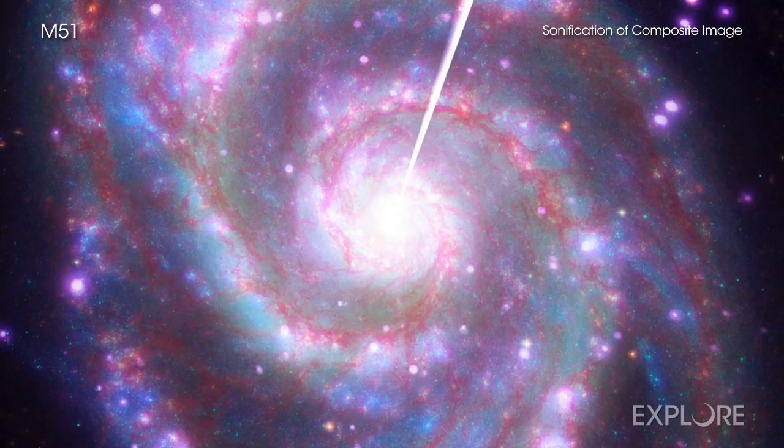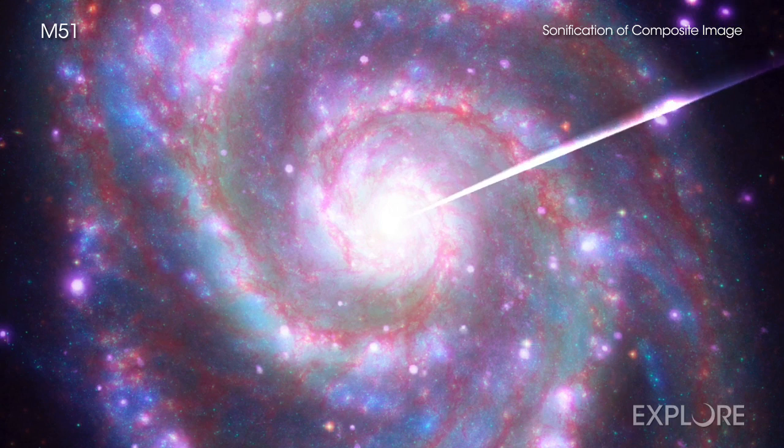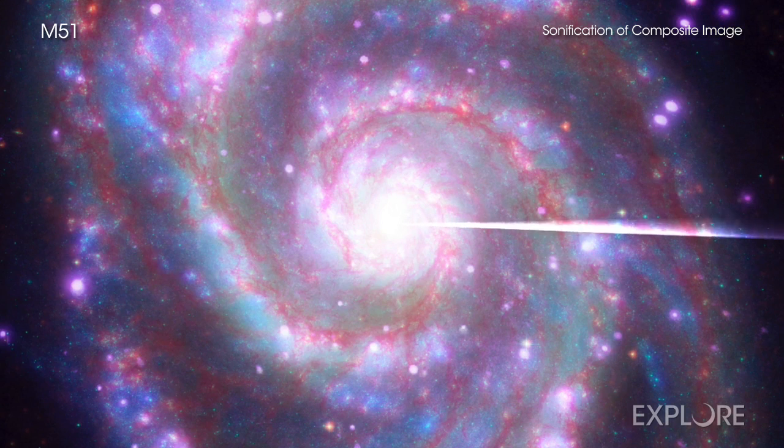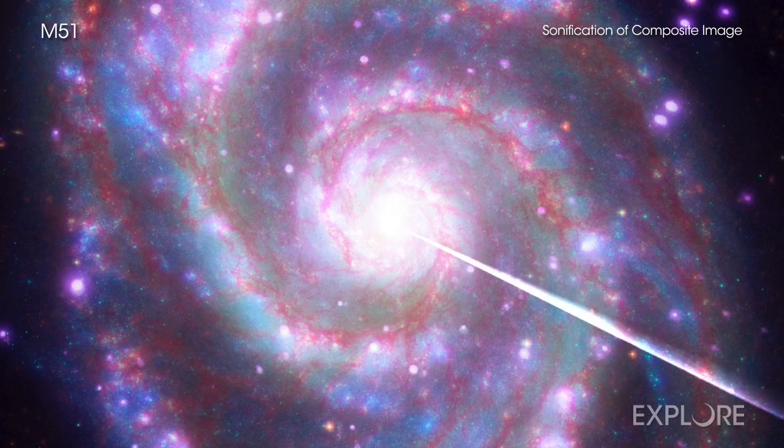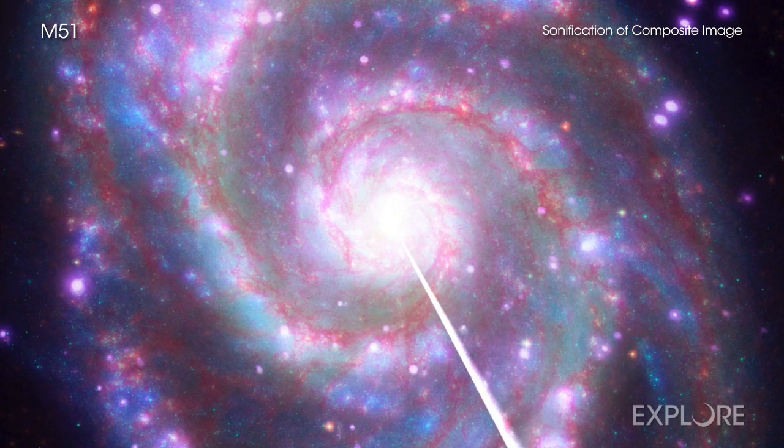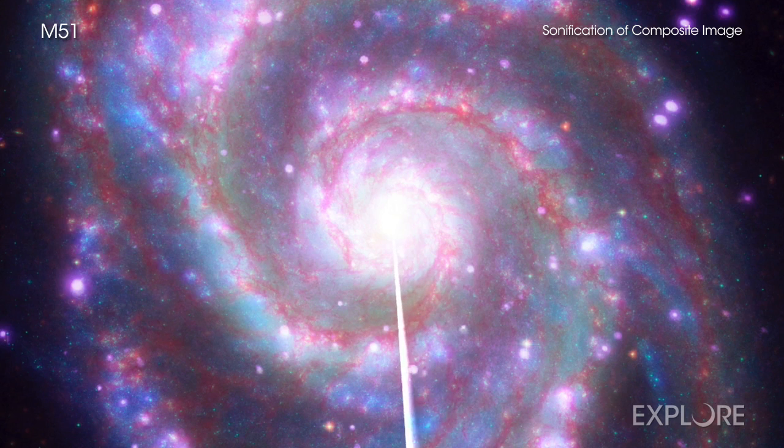The final member of this trio of newly sonified images is the Whirlpool Galaxy, which also goes by its formal name of Messier 51. The Whirlpool is oriented face-on to Earth, giving telescopes here a view of another spiral galaxy similar to our Milky Way.